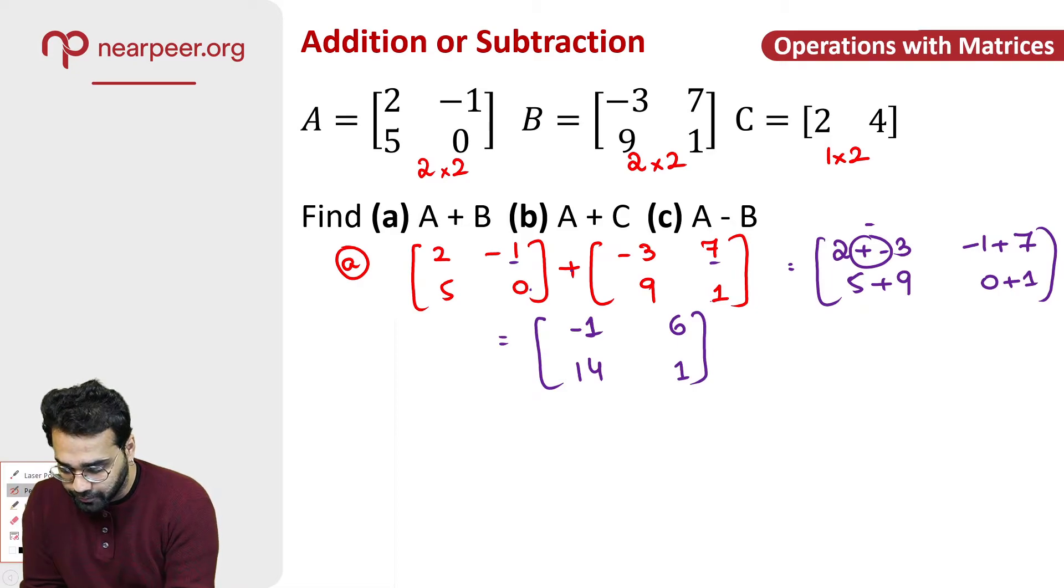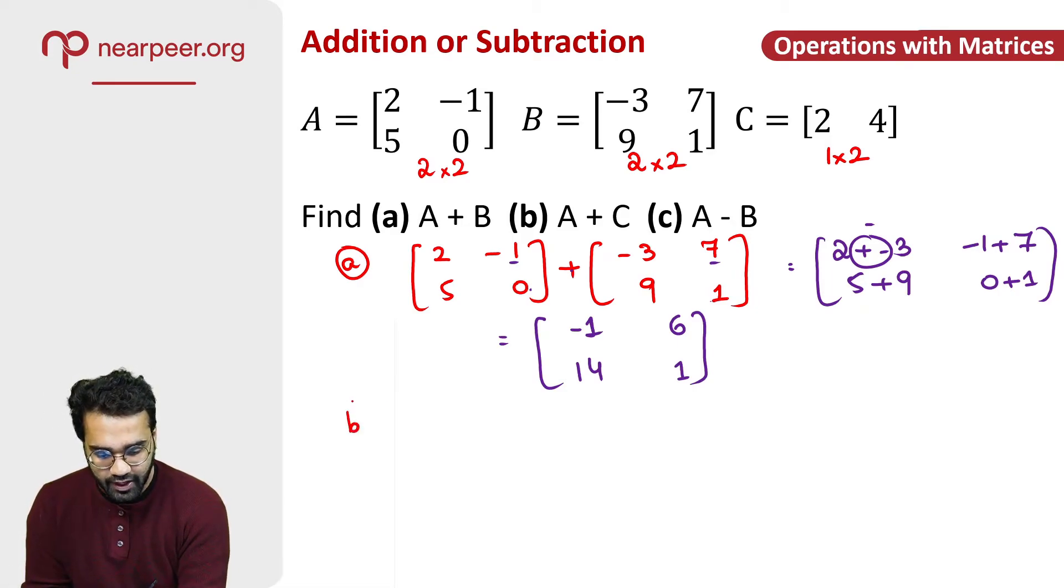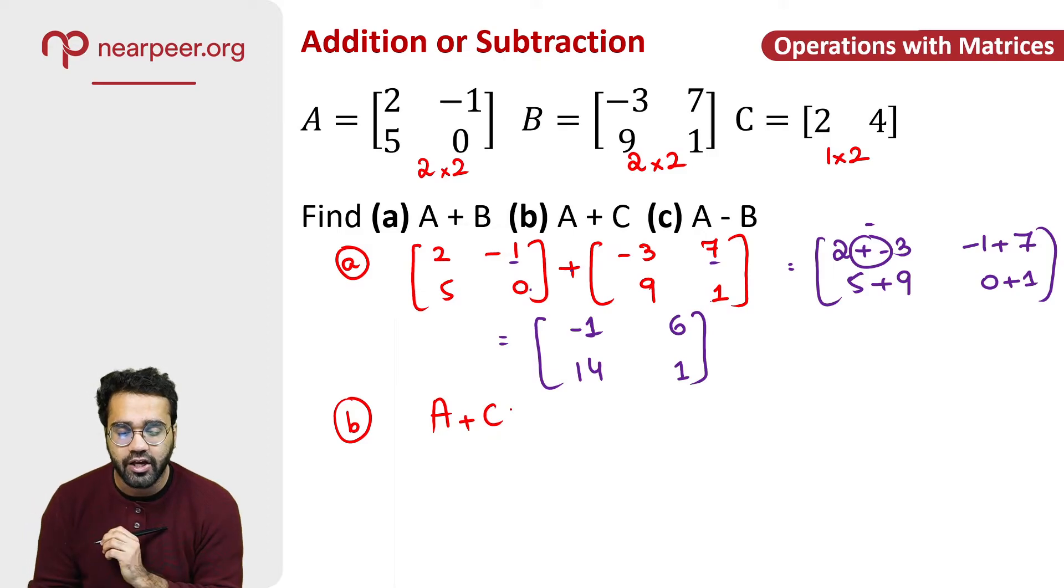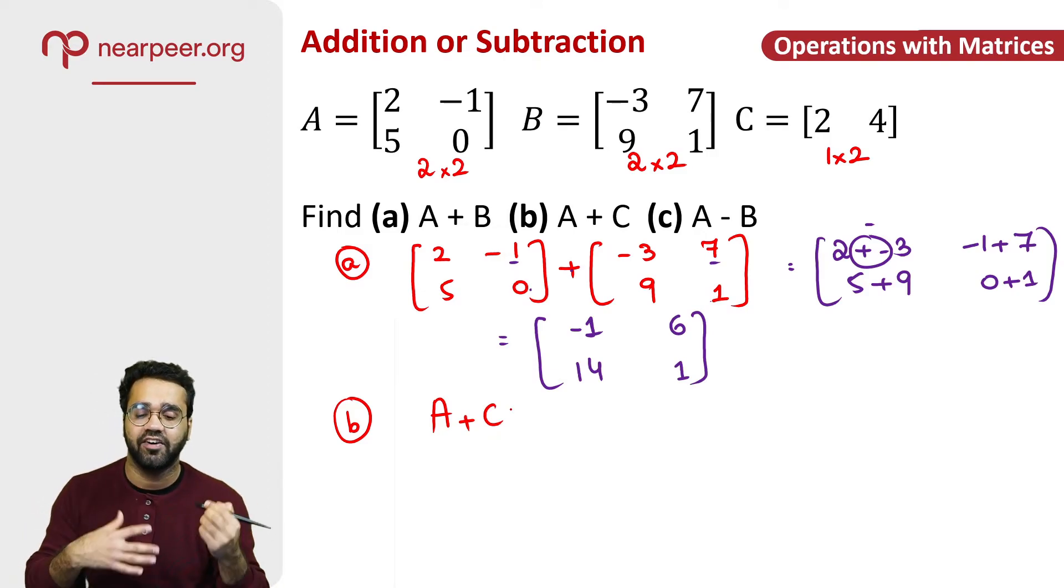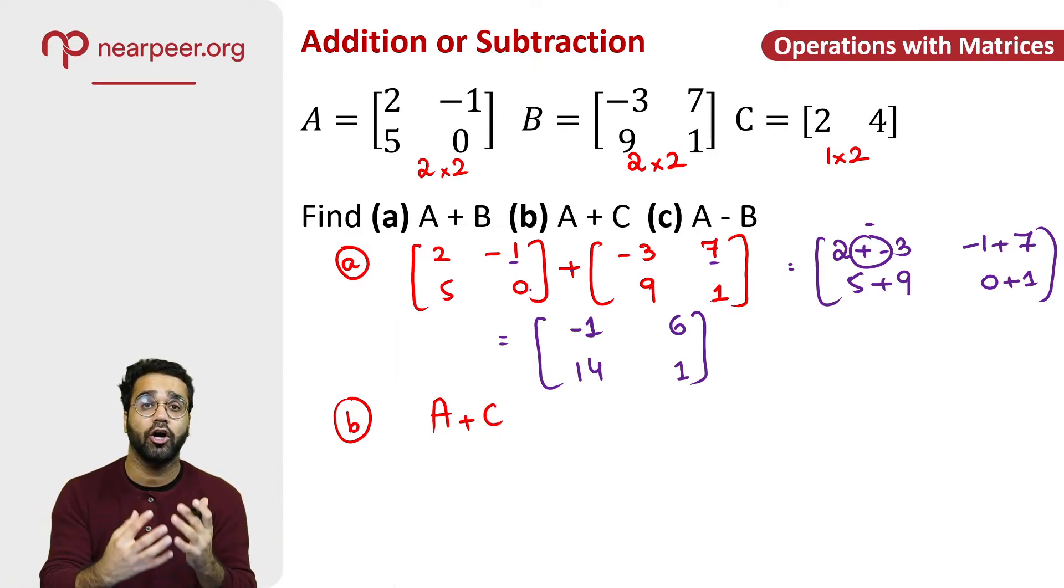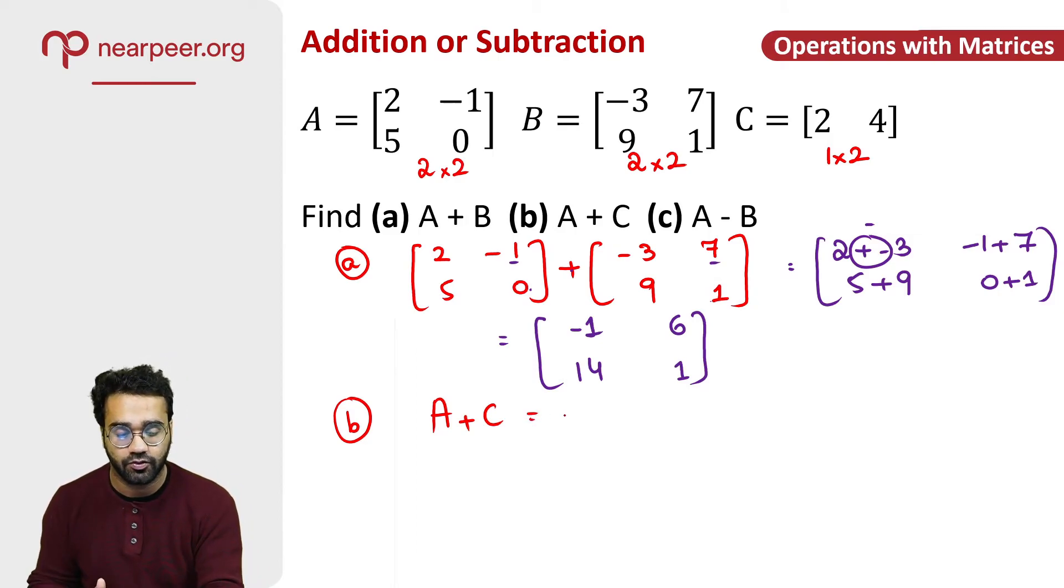Moving on to part B, A plus C. Now, you can't do A plus C. Why? Because A and C have a different order which means you cannot add or subtract A plus C. So this is not applicable or not possible.